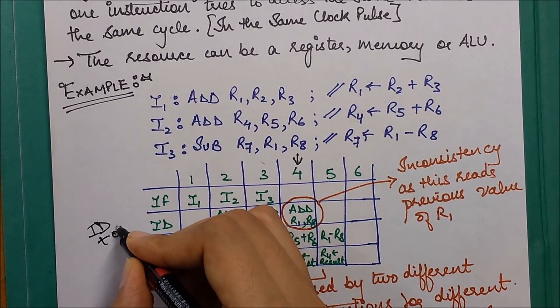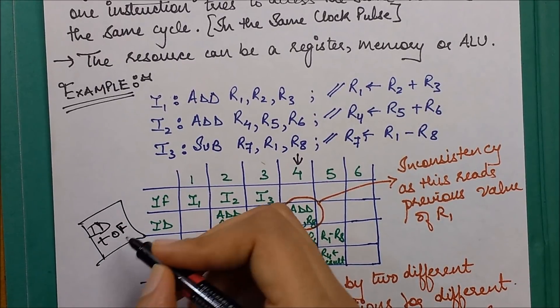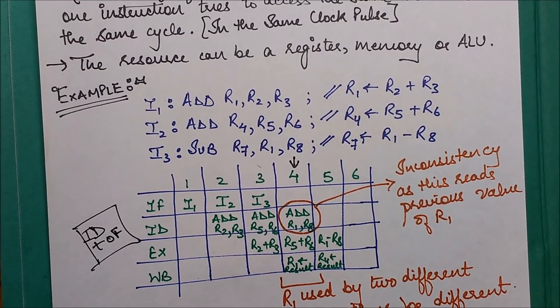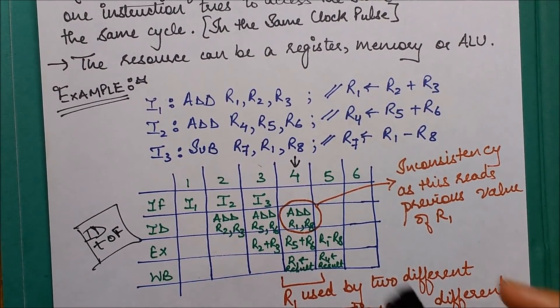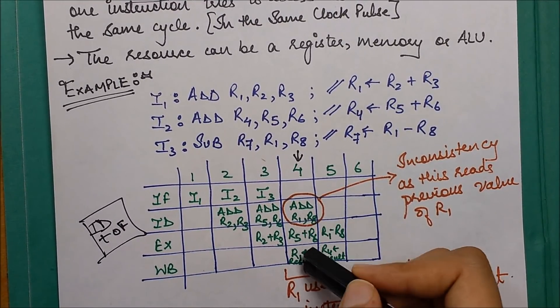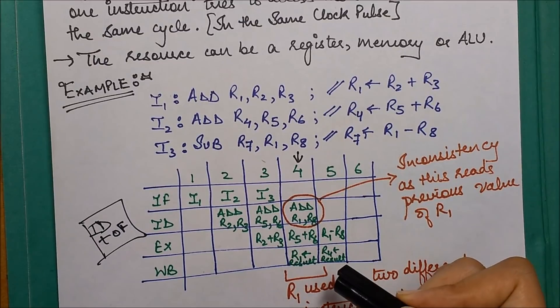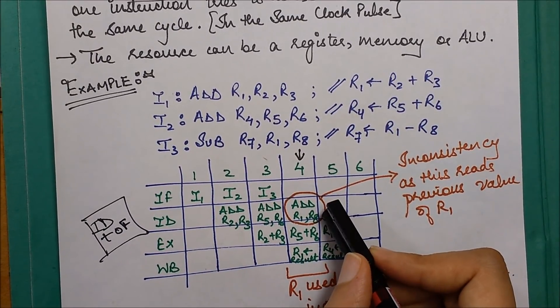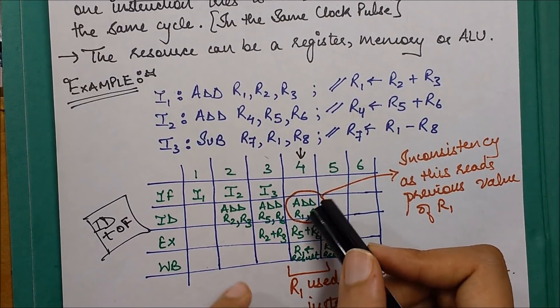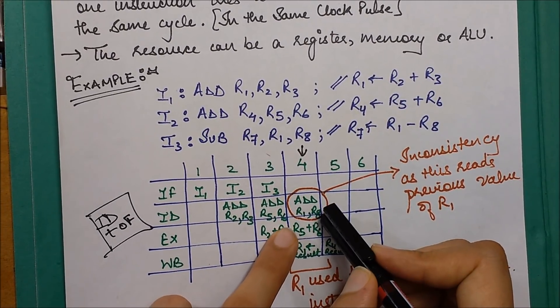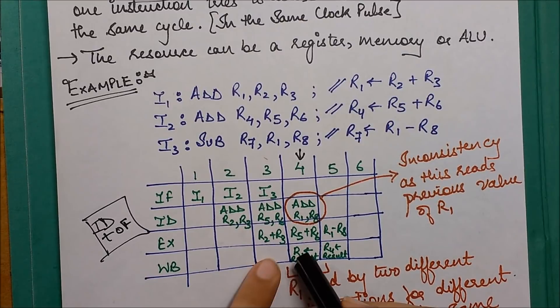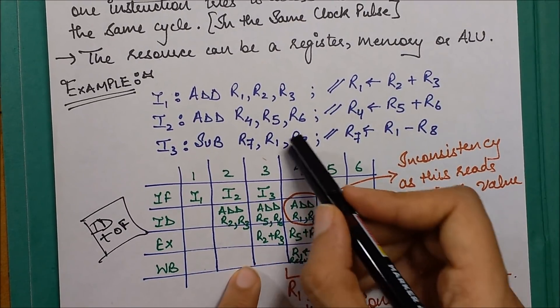In this clock pulse, if you analyze, R1 is being utilized for two purposes. One is you are fetching the operand from here, and in the same clock pulse, you're trying to write back your result into it. This is where inconsistency arises.